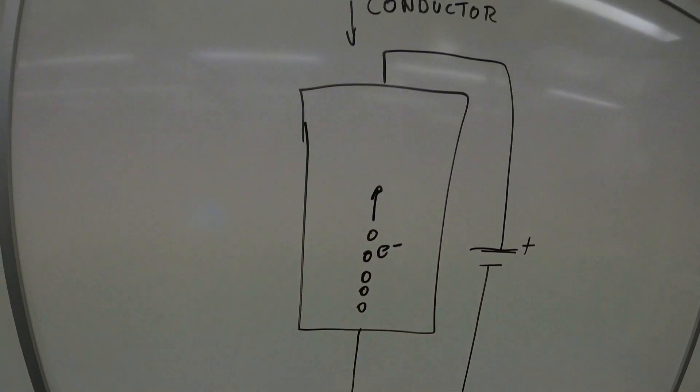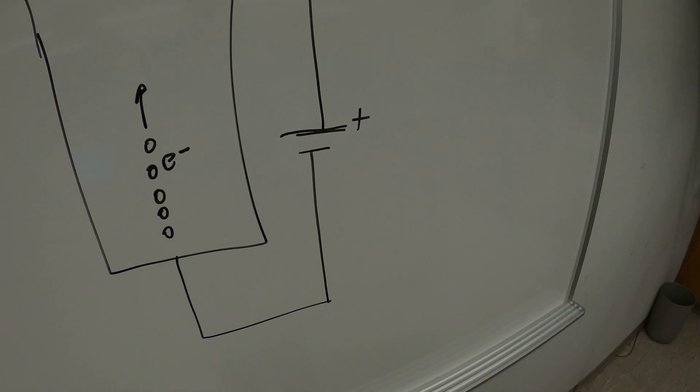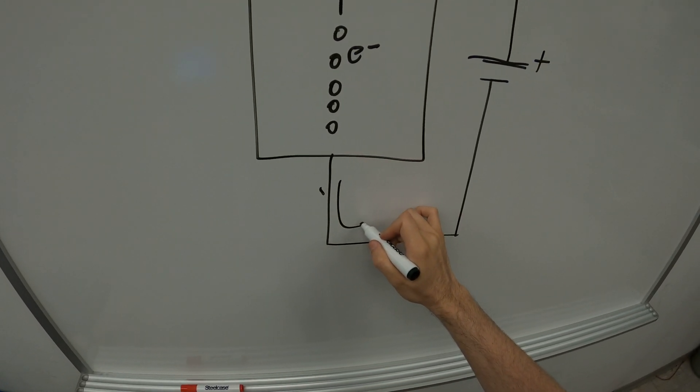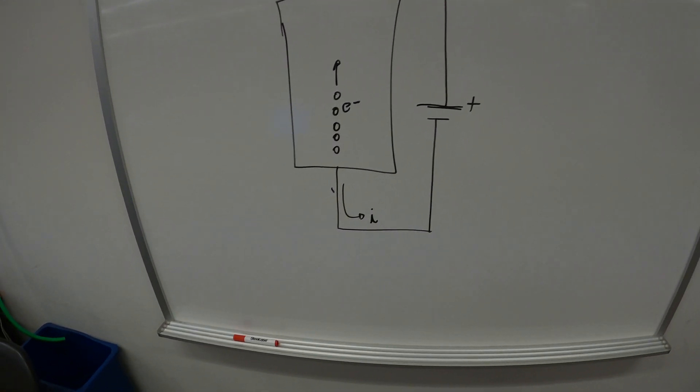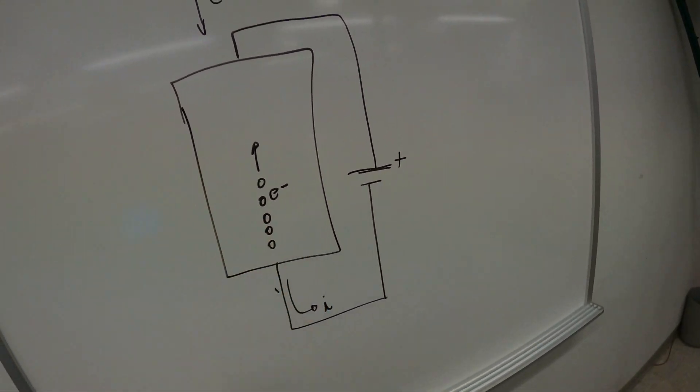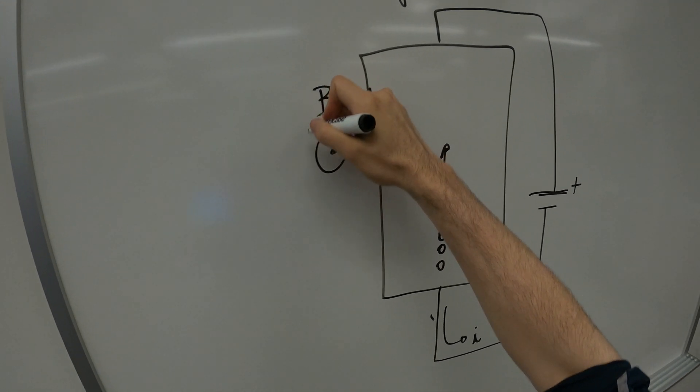And the electrons are traveling to that side, and the current is going in this direction. So if you have a magnetic field that's pointing outward here, so you have a magnetic field pointing this direction here.